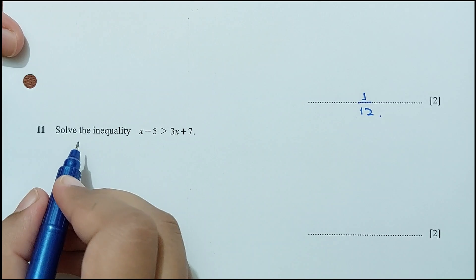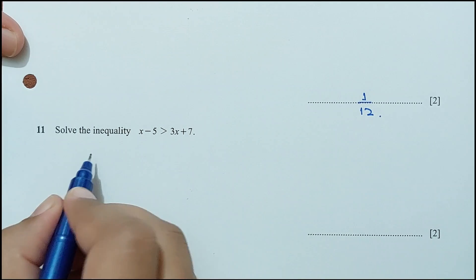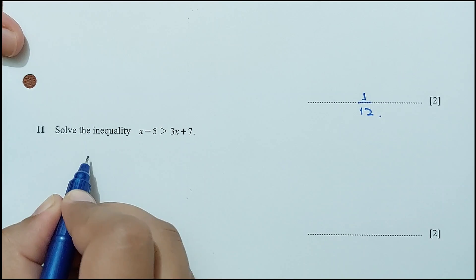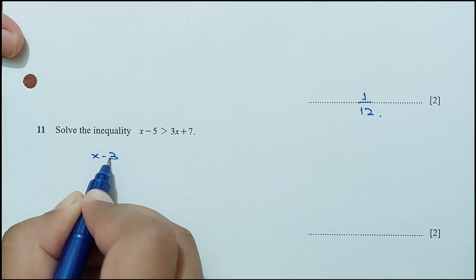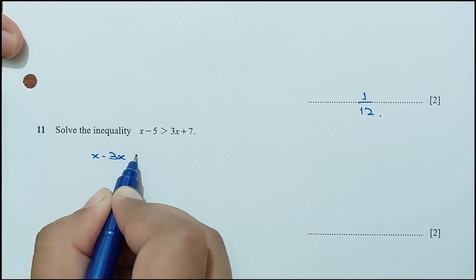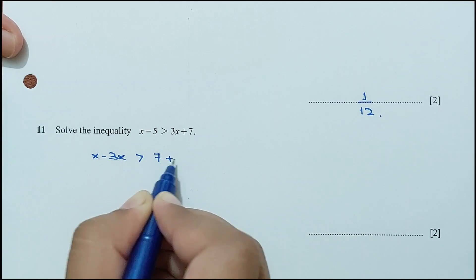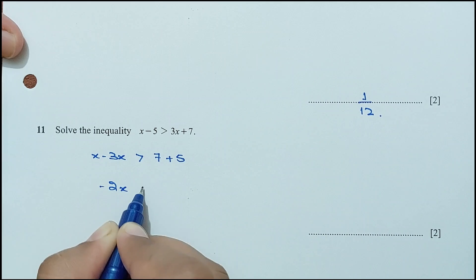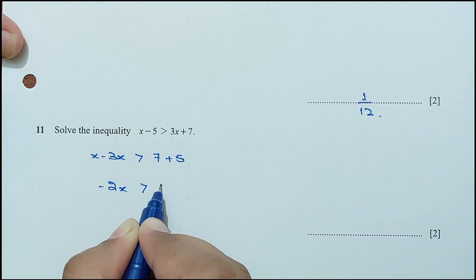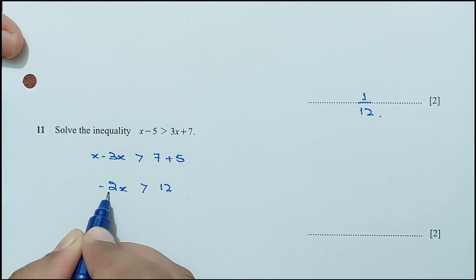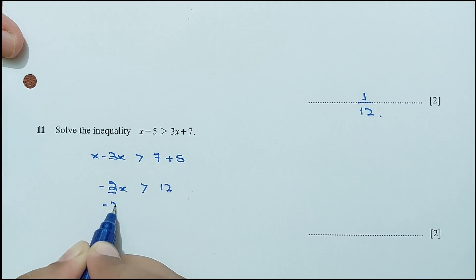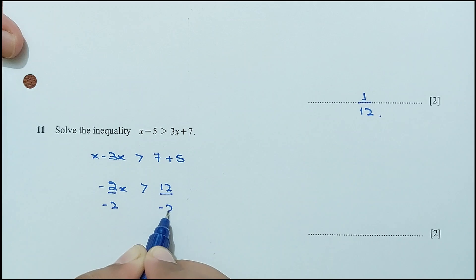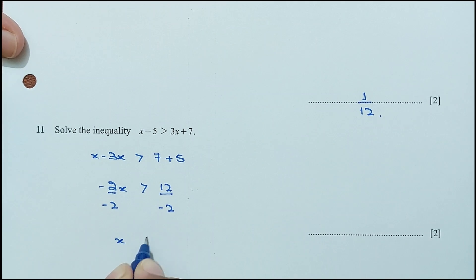Question 11: solve the inequality. Combining like terms: x − 3x > 7 + 5, giving −2x > 12. Dividing by −2 and reversing the inequality sign: x < −6.